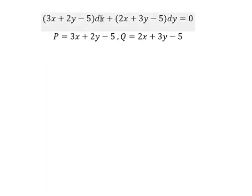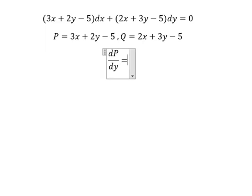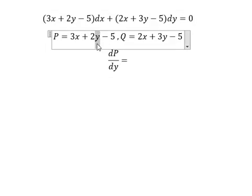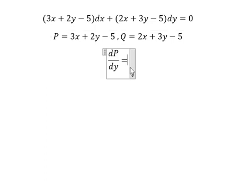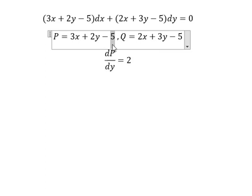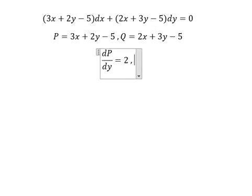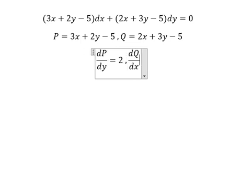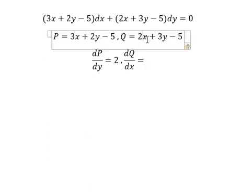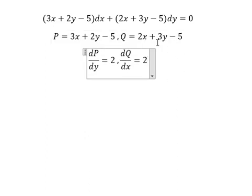For dx, we need to find the derivative of P with respect to y. We only have y here, so the derivative gives us number one. For the other terms we don't have y, so we get zero. For dy, we need to find the derivative of Q with respect to x. We only have x here, so that gives number one, and the other term gives zero.